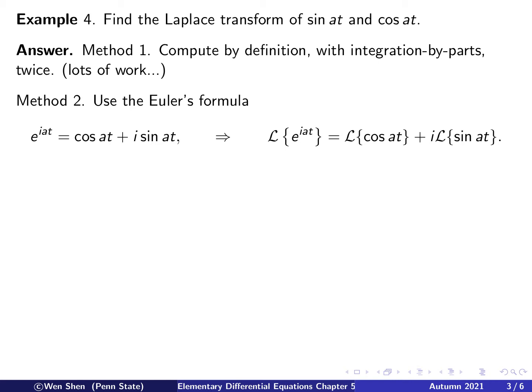In this video, we will use Euler's formula connecting the sine and cosine functions with the exponential function with complex variables. Euler's formula says e to the i a t, where i is the imaginary number. This exponential function is a sine and cosine in the complex value, so the real part is cosine a t and the imaginary part is sine a t.